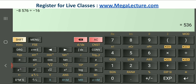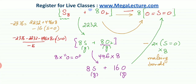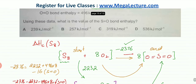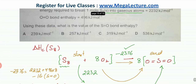Solving this on the calculator gives a value of 536 kJ/mol. So the S=O bond energy comes out to be +536 kJ/mol. That is the correct answer for this question.